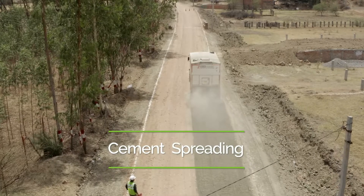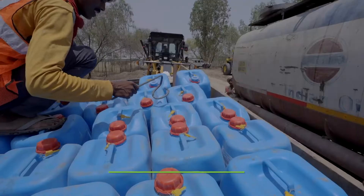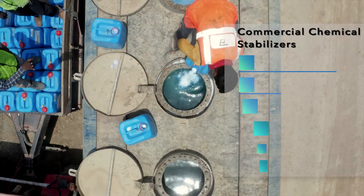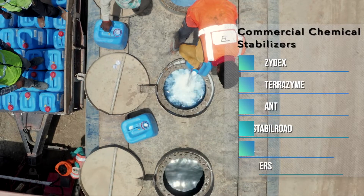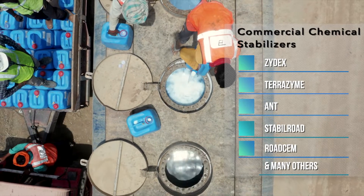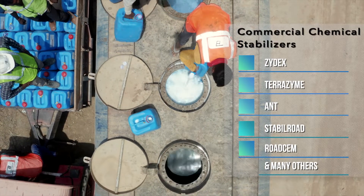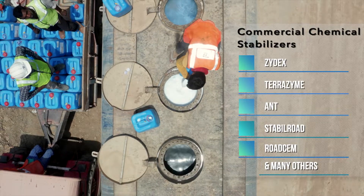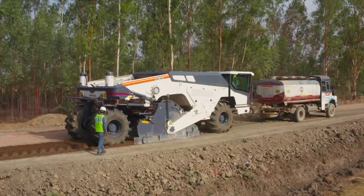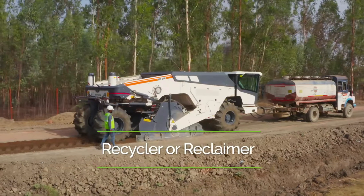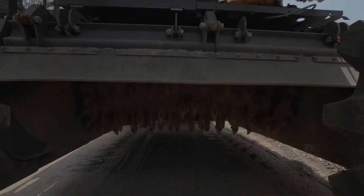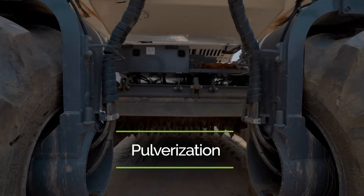This is followed by spreading of cement and mixing of commercial chemical stabilizers like Zydex, Terrazyme, ANT, Stablerode, Roadsem, and many others. Subsequently, the recycler or reclaimer — the main FDR machine — is applied for pulverization.